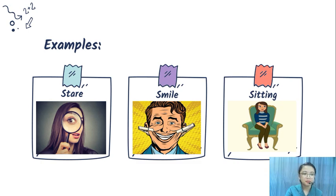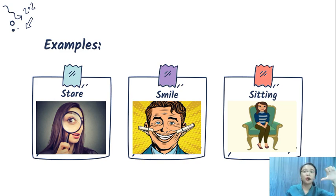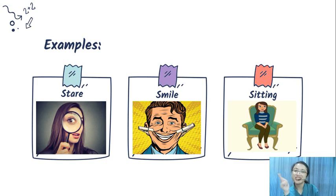Another example — the thumbs up gesture means okay, and the thumbs down means not okay. These are gestures — non-verbal cues that carry clear meaning.